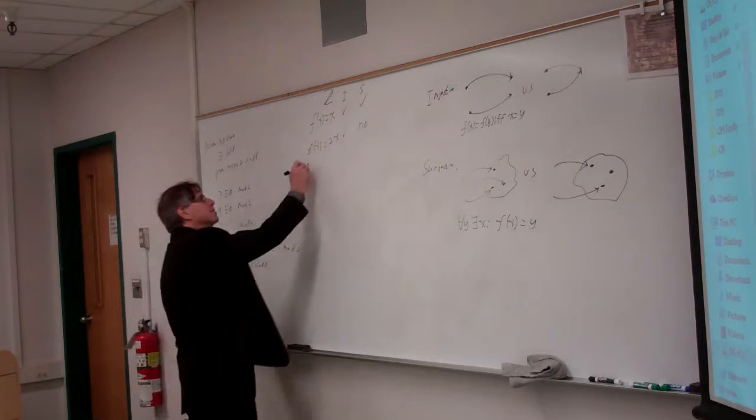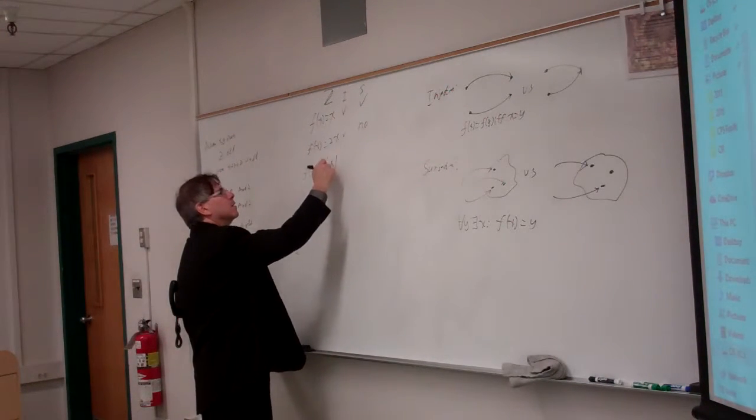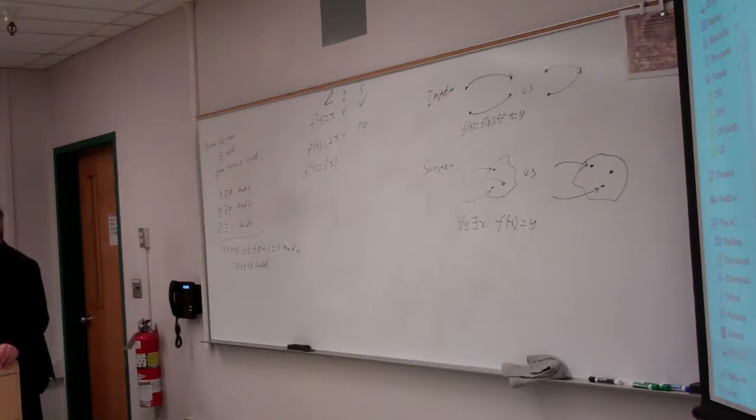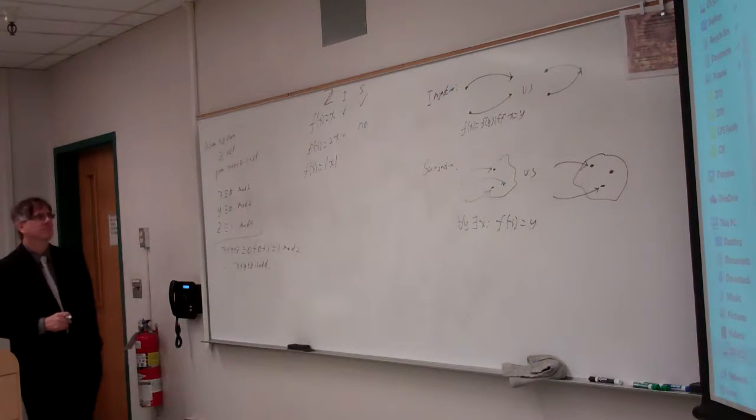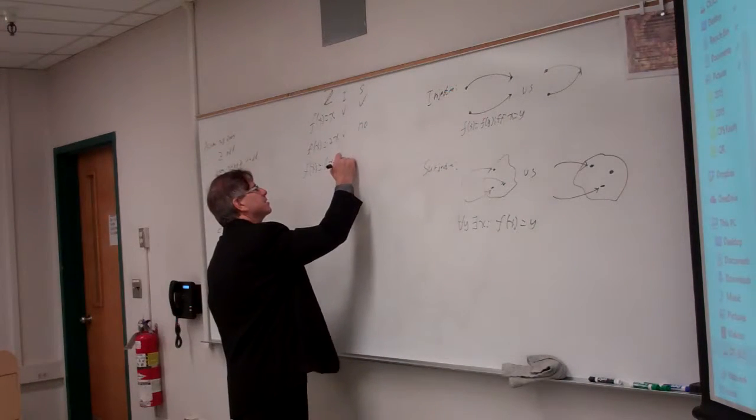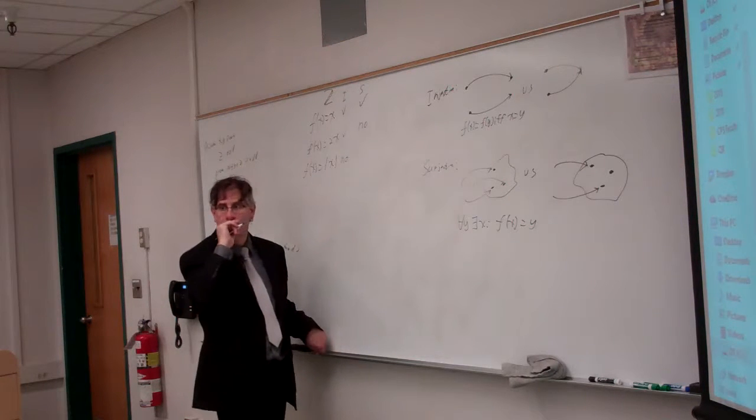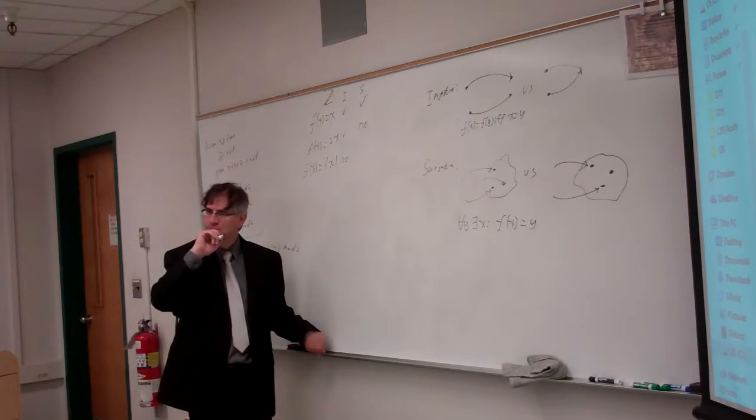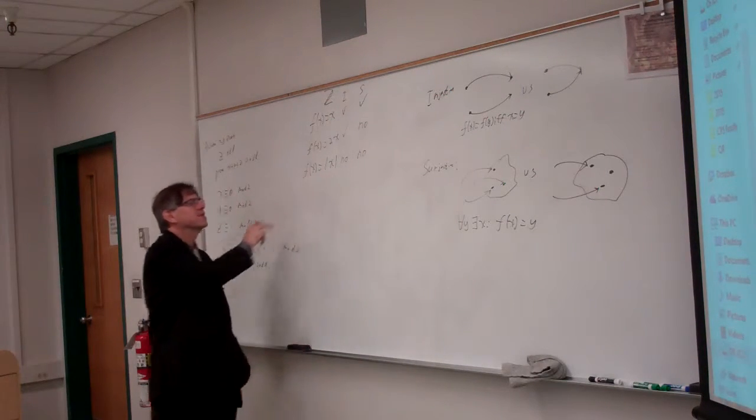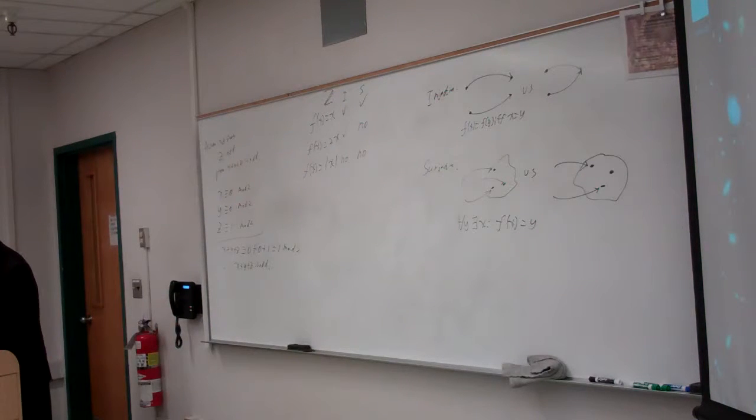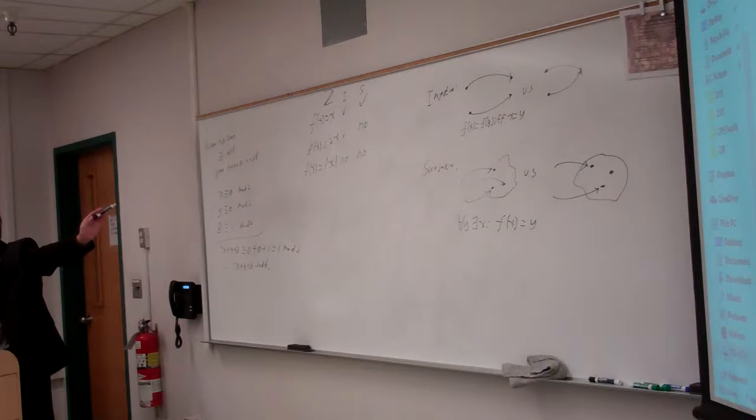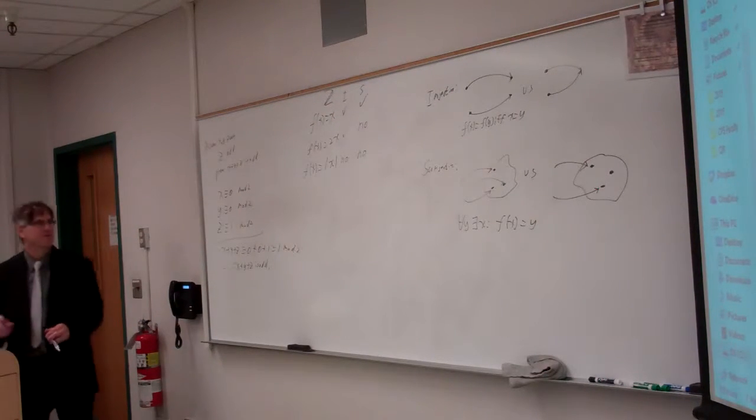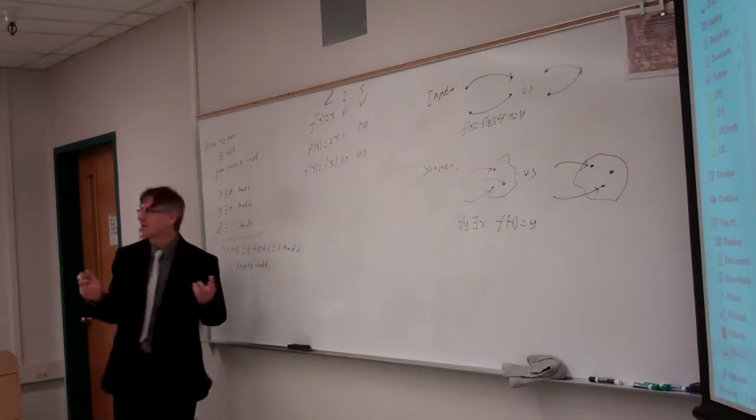f of x equals absolute x. Is that injective? So, example of two points that match the same thing. One and negative one. One and negative one. So it's not injective. Is it surjective? Example of a number that's not mapped. Any negative number. Any negative number. Any negative number. There's no x such that f of x equals negative one. So you've got to be really careful about domain versus range. Right? That we can put any value of x in that we want. Any integer. But the values that we get out are just the ones that are equal to the absolute value of some integer.